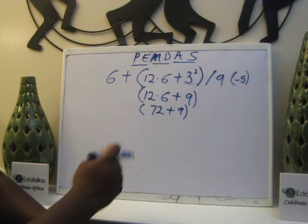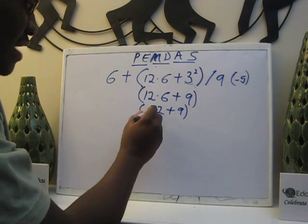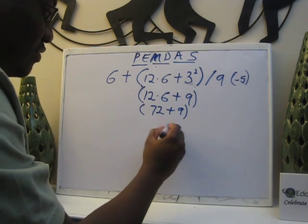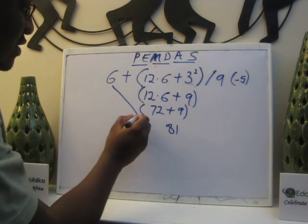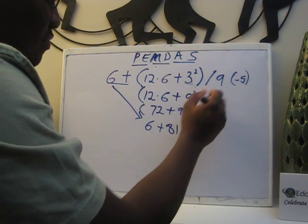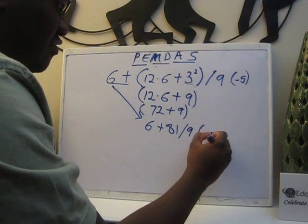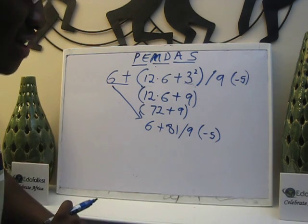At this point, I no longer need the parenthesis because I now know 72 plus 9 is 81. So I bring down my 6 plus 81 divided by 9 times negative 5 in parenthesis.